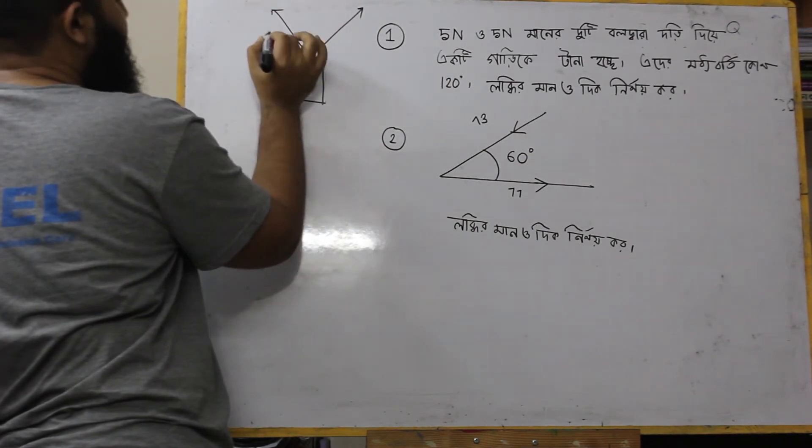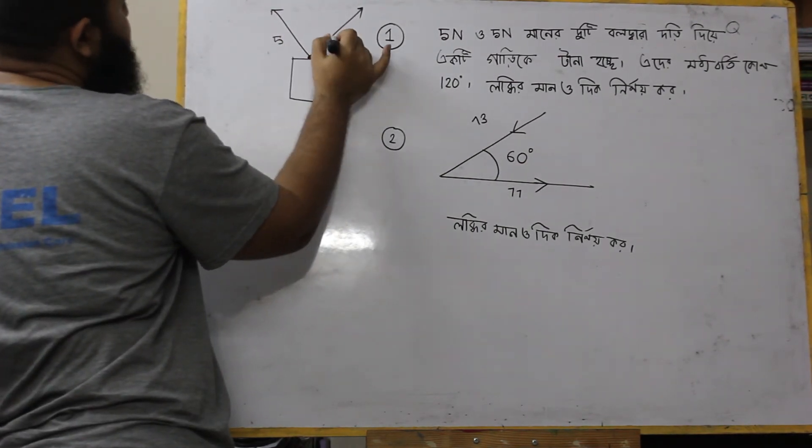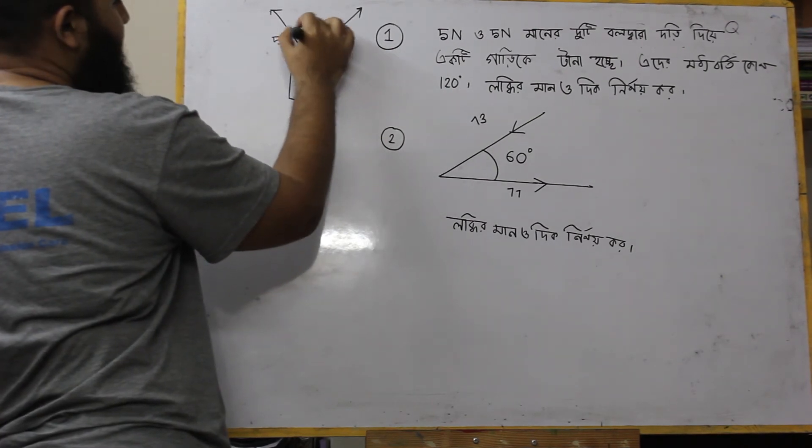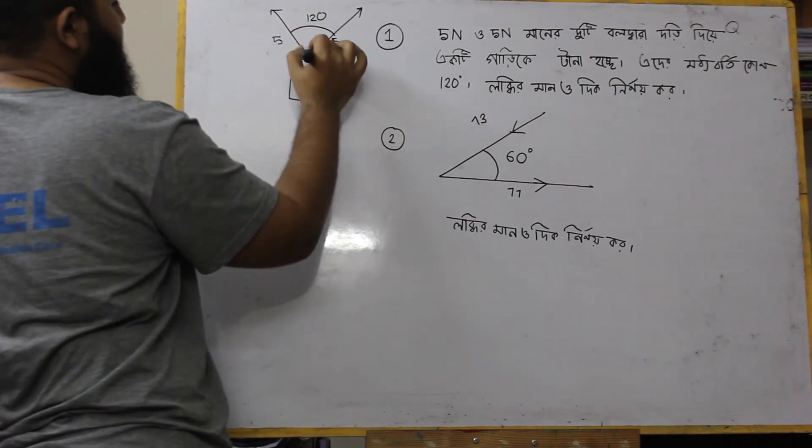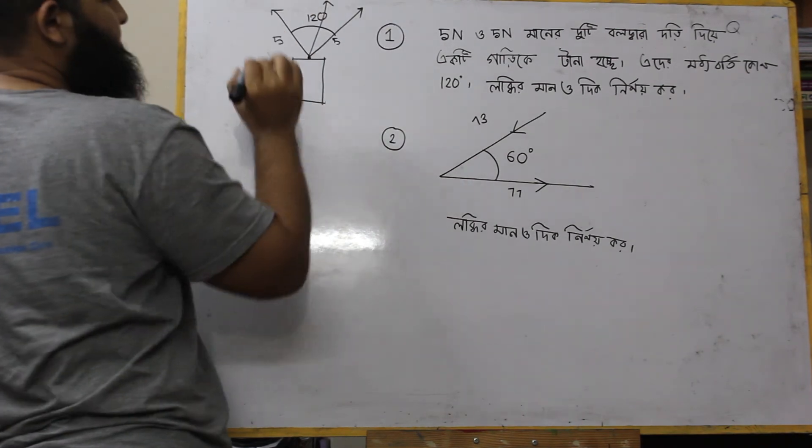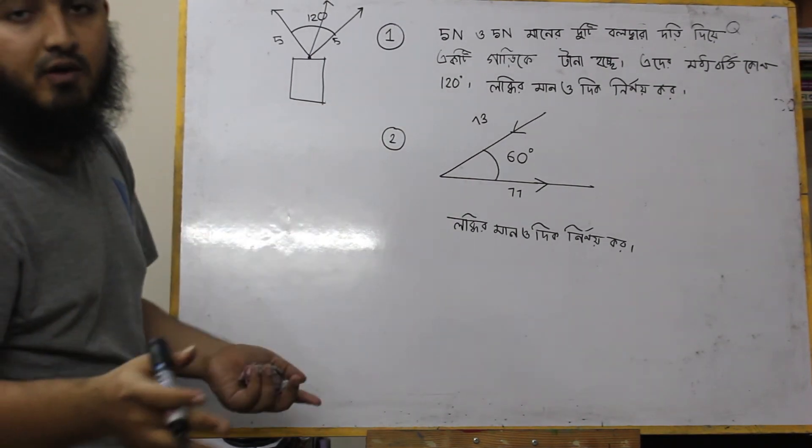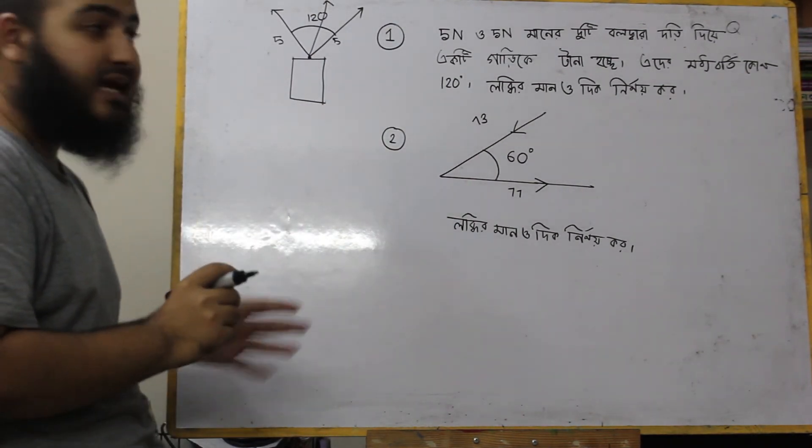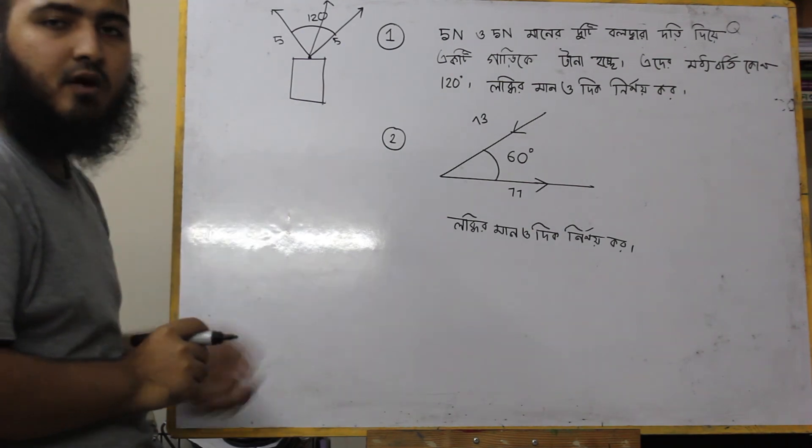The forces are 5 newton and 5 newton at an angle between 120 degrees. So the resultant value - the resultant went to the right, the resultant went to the right direction. Okay?